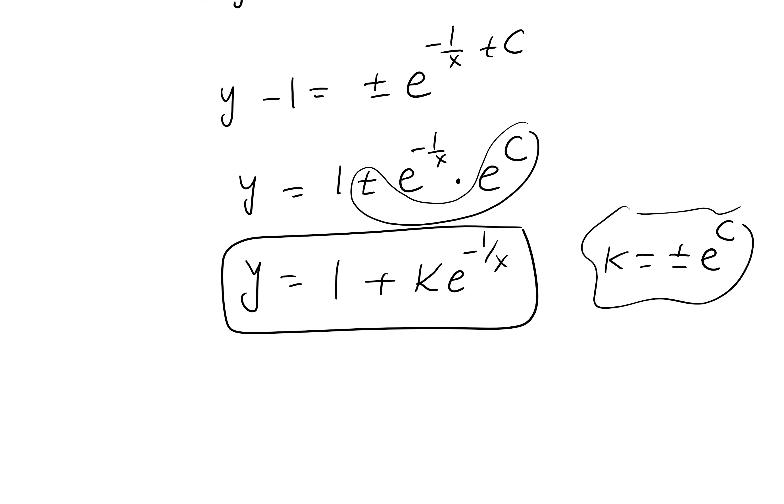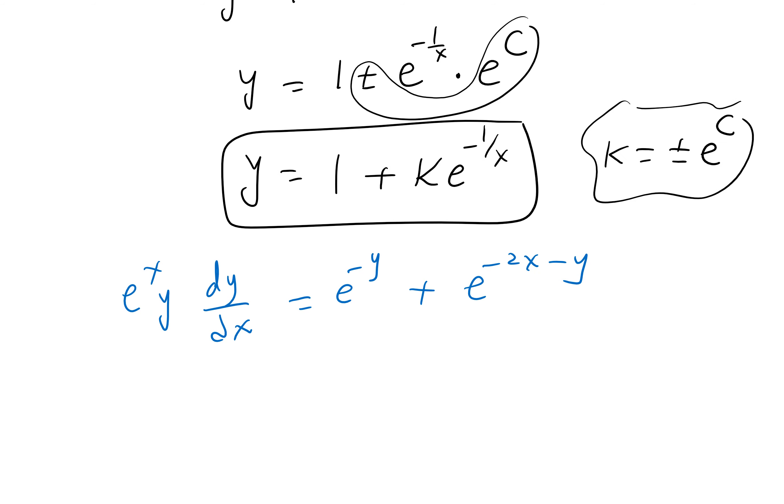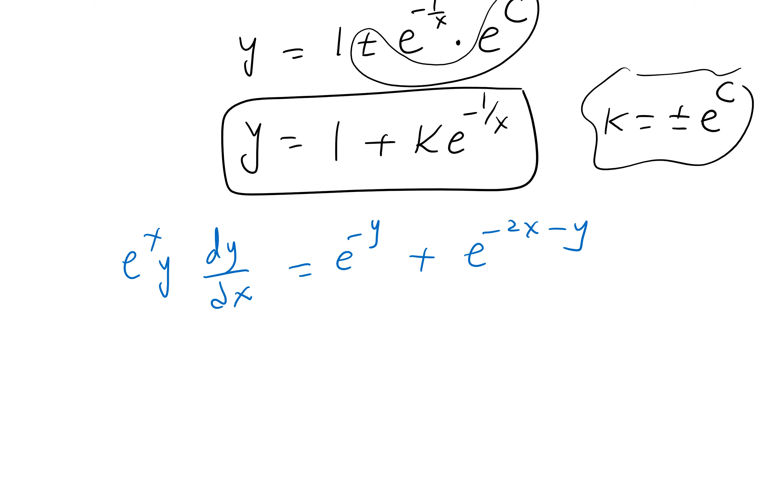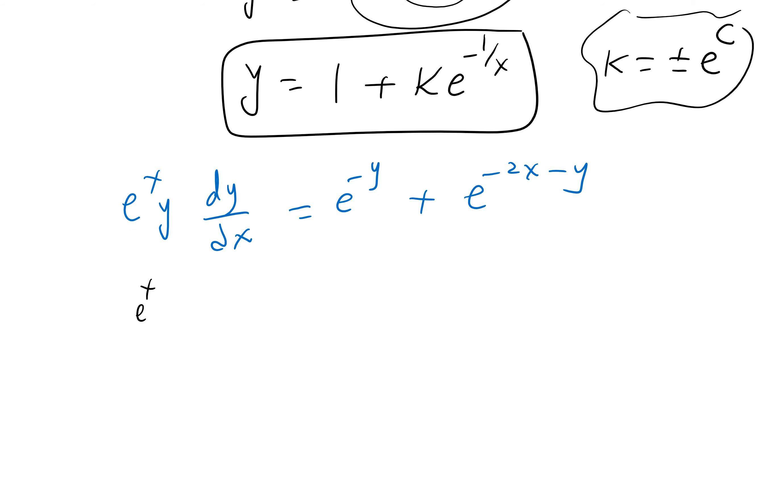Next one. e^x times y times dy/dx equals e^(-y). Try this one for two minutes. You can use any variable you like. The way to do this: e^x times y times dy/dx stays the same. Here we keep this, we can rewrite this like so.